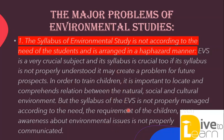Each chapter should be delivered in a manner-wise way so students can understand the content properly. But the problem is that the components are not arranged in a good way — the syllabus is not fully made in an organized manner. In order to train children, it is important to locate and comprehend relations between the natural, social, and cultural environment.